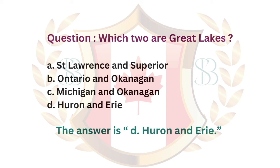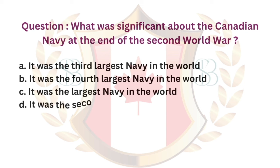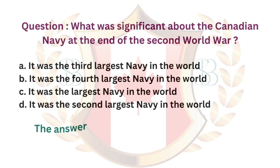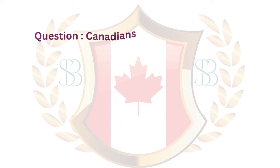Question. What was significant about the Canadian Navy at the end of the Second World War? a. It was the third-largest Navy in the world. b. It was the fourth-largest Navy in the world. c. It was the largest Navy in the world. d. It was the second-largest Navy in the world. The answer is a. It was the third-largest Navy in the world.